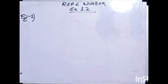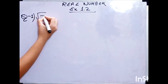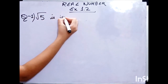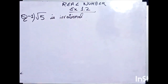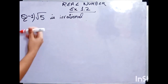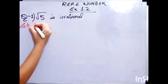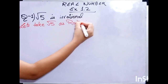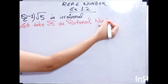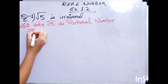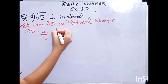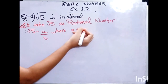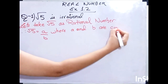Question number 1 is a proving question — proving irrationality. We have to prove that root 5 is irrational. How will you do that? So firstly, let's take root 5 as a rational number. You will consider it a rational number. Therefore, root 5 is equal to A upon B, where A and B are co-prime numbers.